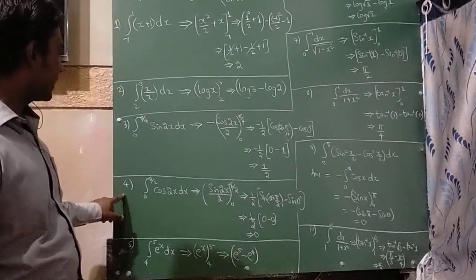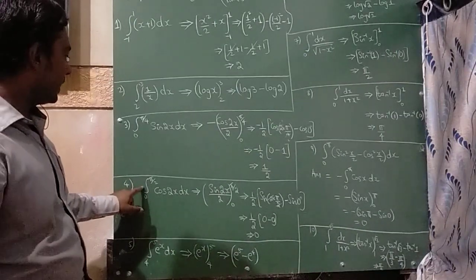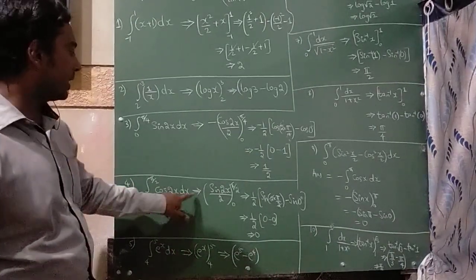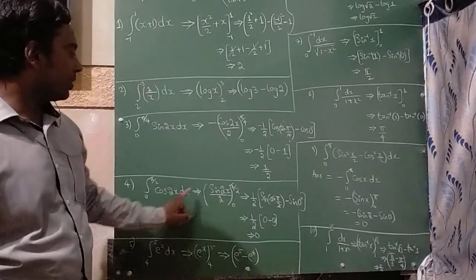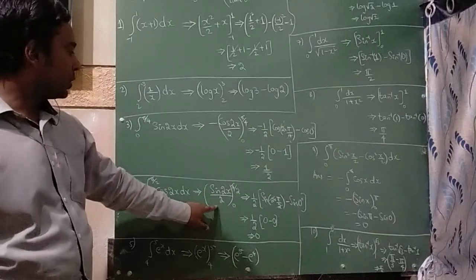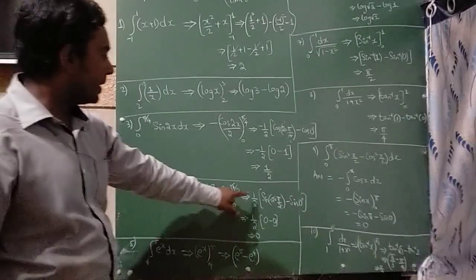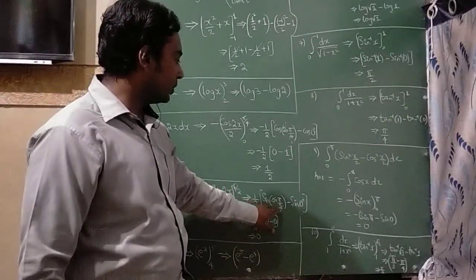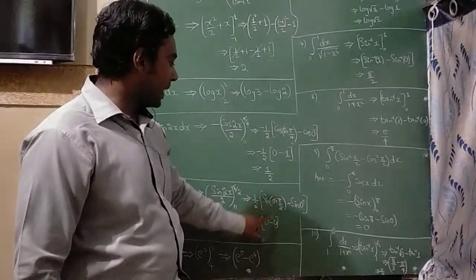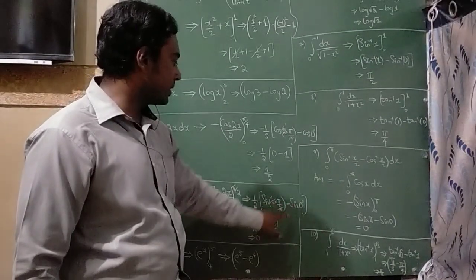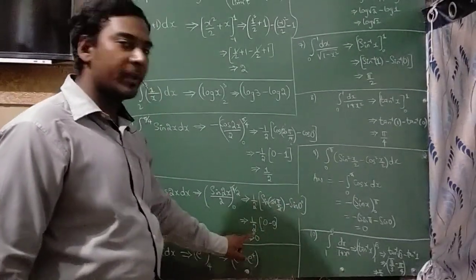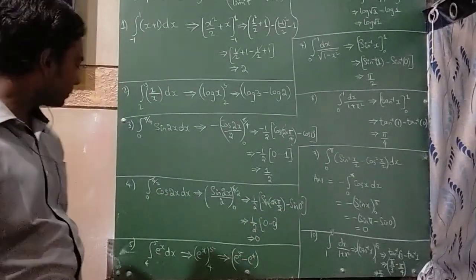The fourth question is integration of cos 2x dx with limits 0 to π/2. Integration of cos 2x is sin 2x divided by 2. The 2s cancel. Applying the limits: sin π = 0 and sin 0 = 0, so the whole answer is 0.